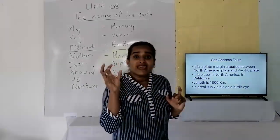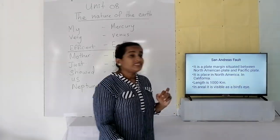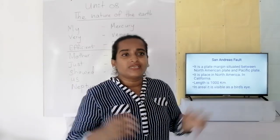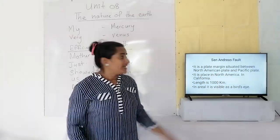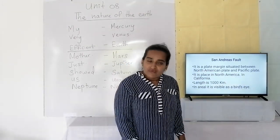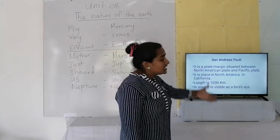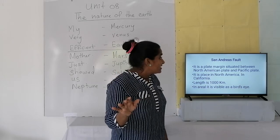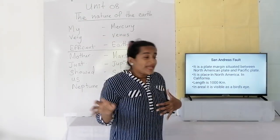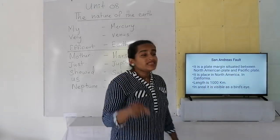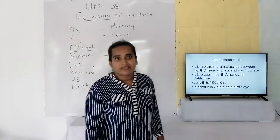Now I want to give one example of a tectonic plate boundary or margin. We have learned that a tectonic plate boundary is the margin between two tectonic plates. The San Andreas Fault is one example of a plate boundary. It is a plate margin situated between the two tectonic plates: the North American plate and the Pacific plate.